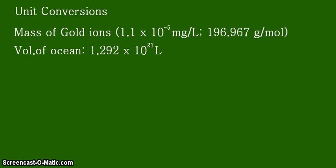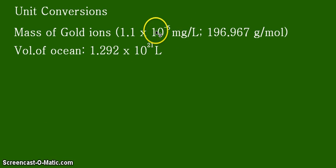Given that the concentration of gold ions in the ocean is 1.1 times 10 to the negative 5 milligrams per liter — that's parts per million — and the molar mass of gold is 196.967 grams per mole, the volume of the whole ocean from the previous video is 1.292 times 10 to the 21 liters. The negative exponent on concentration means it's a very small concentration.